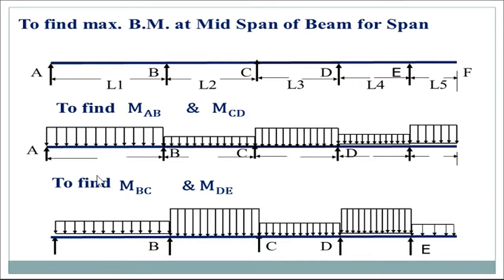Then we change the loading combination: minimum load in the first span, maximum load in the spans where we need maximum bending moment — that is spans BC and CD. Using these two combinations, we get the maximum moment in the mid-span of all spans.